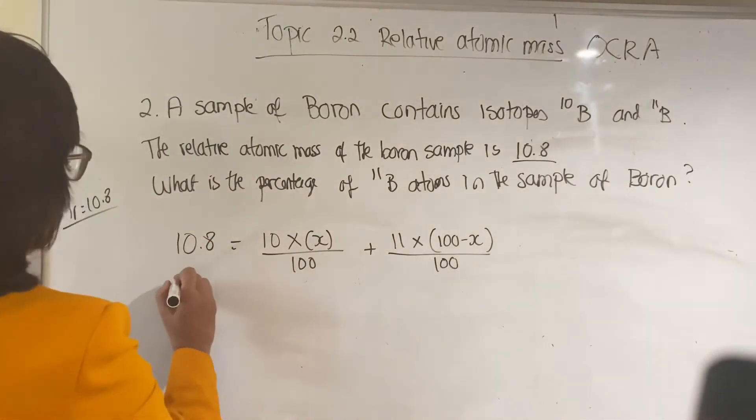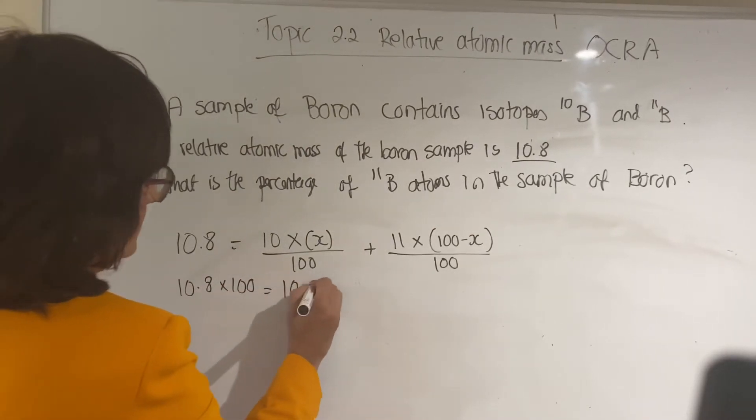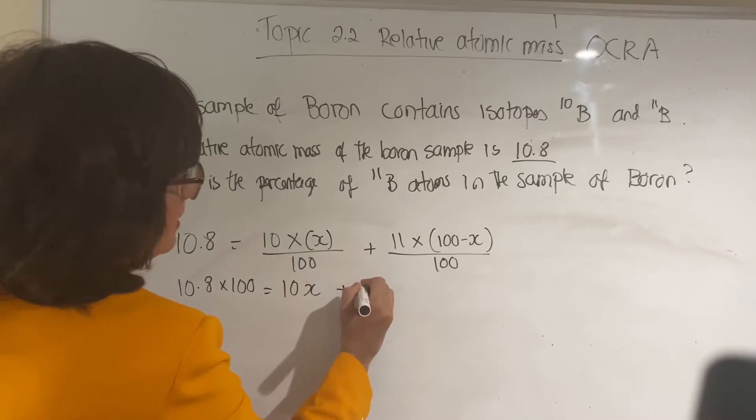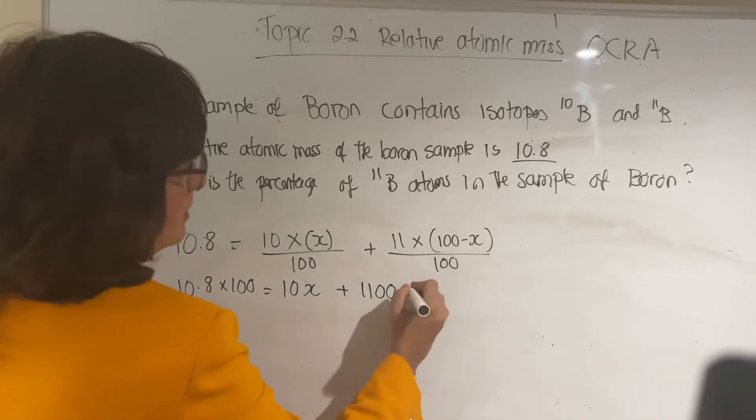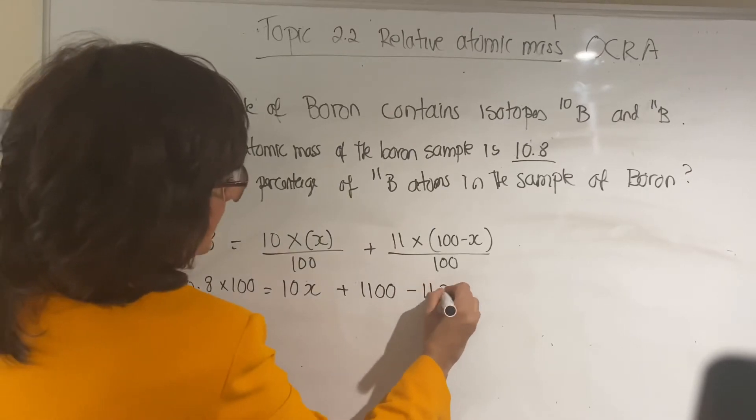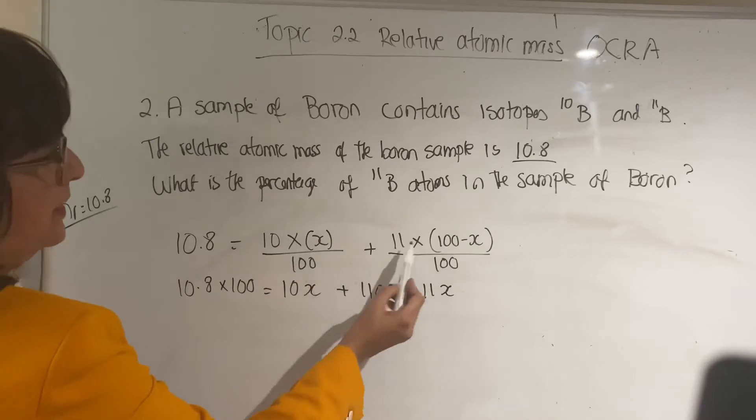So what you do: it goes 10.8 times 100 equals 10x plus 1100 minus 11x. So what I did, I got rid of 100 and I multiplied that by x, that by 100, that by x.